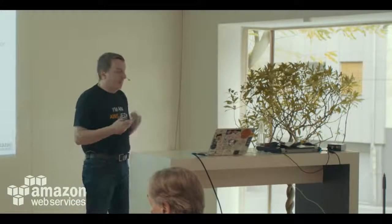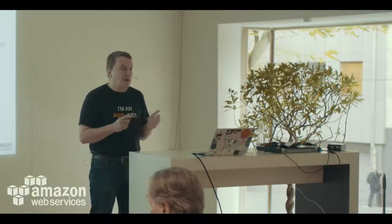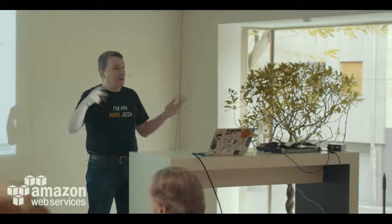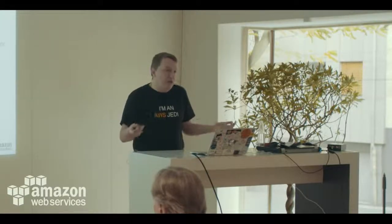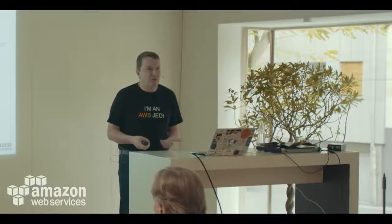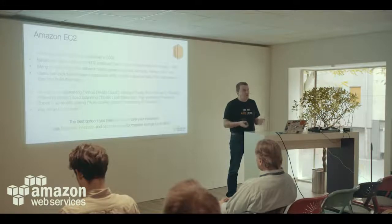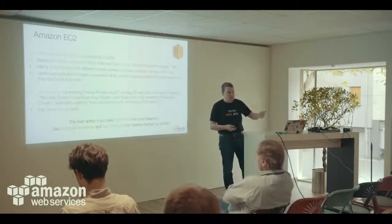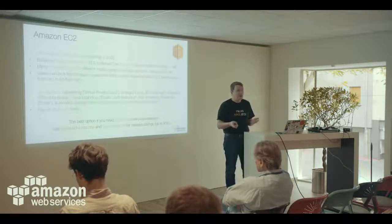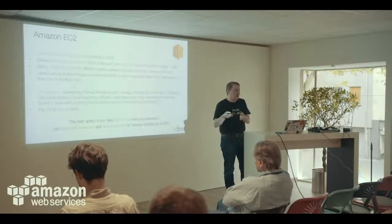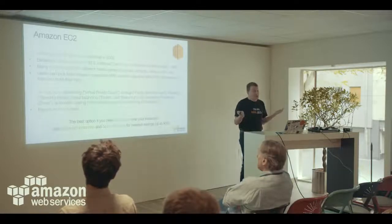Two other things that allow massive savings: reserved instances and spot instances. Reserved instances means you say, 'I've got 25, 30, 50 instances that really run 24/7 — they're needed in my infrastructure.' You contact the AWS team and sign a reserved instance deal where by prepaying over one or three years, you get a large discount — anywhere from 20% to around 65% — just by committing to use it for that period.